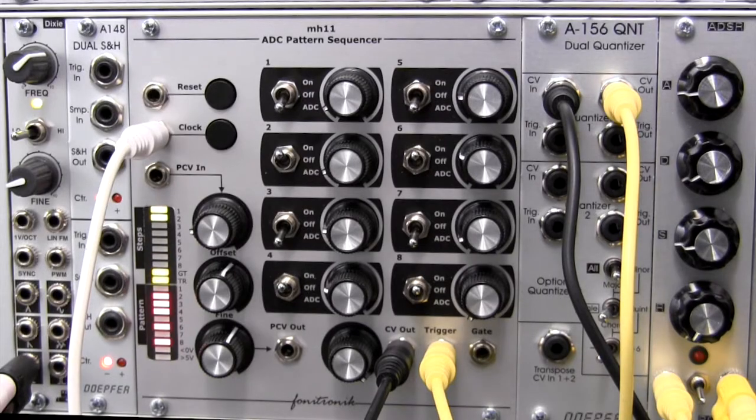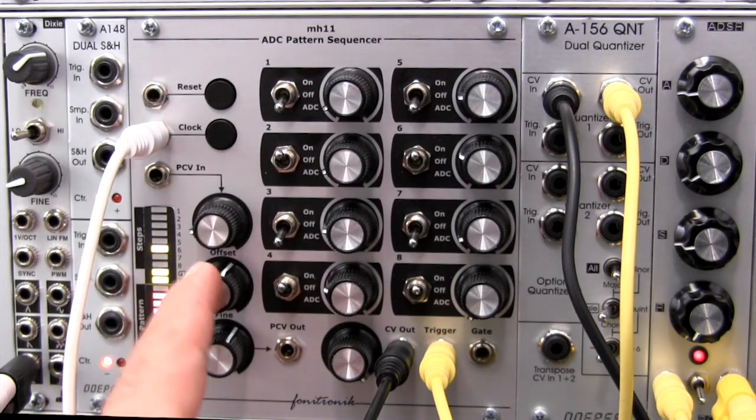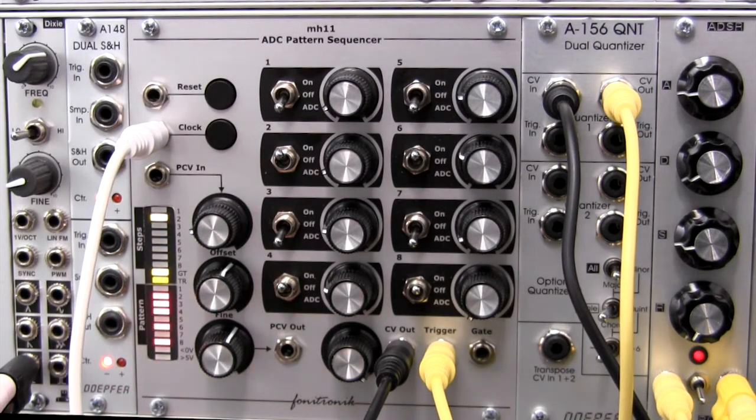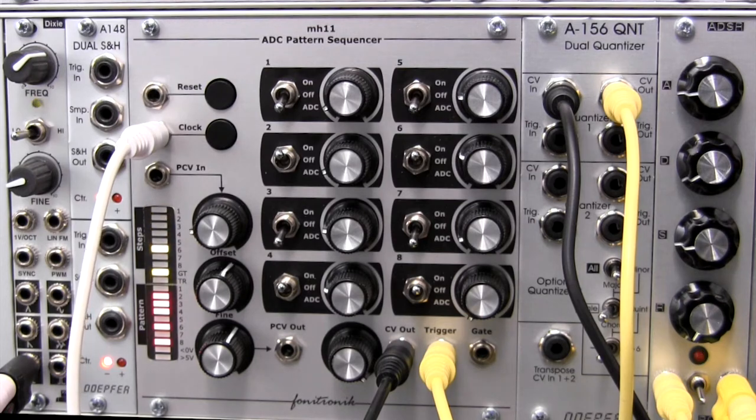So you get the idea as to what's actually happening here. You're able to manipulate the arrangement of the pattern being on and off with this dial over here. And these two allow you to change the pattern up a little bit. But what if you wanted to use some voltage control?